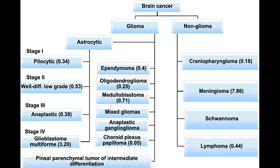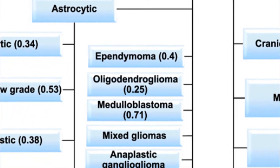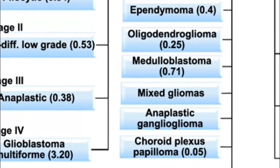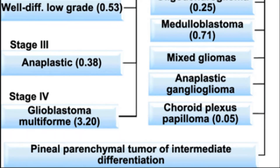On to our next classification: whether the tumour is a glioma or a non-glioma. The glial cells are supportive cells in the CNS. Those originating from glial cells are astrocytic — there are four different grades or stages of astrocytomas. Then you have ependymomas, oligodendrogliomas, medulloblastomas, mixed gliomas, anaplastic gangliogliomas, choroid plexus papillomas, and pineal tumours.